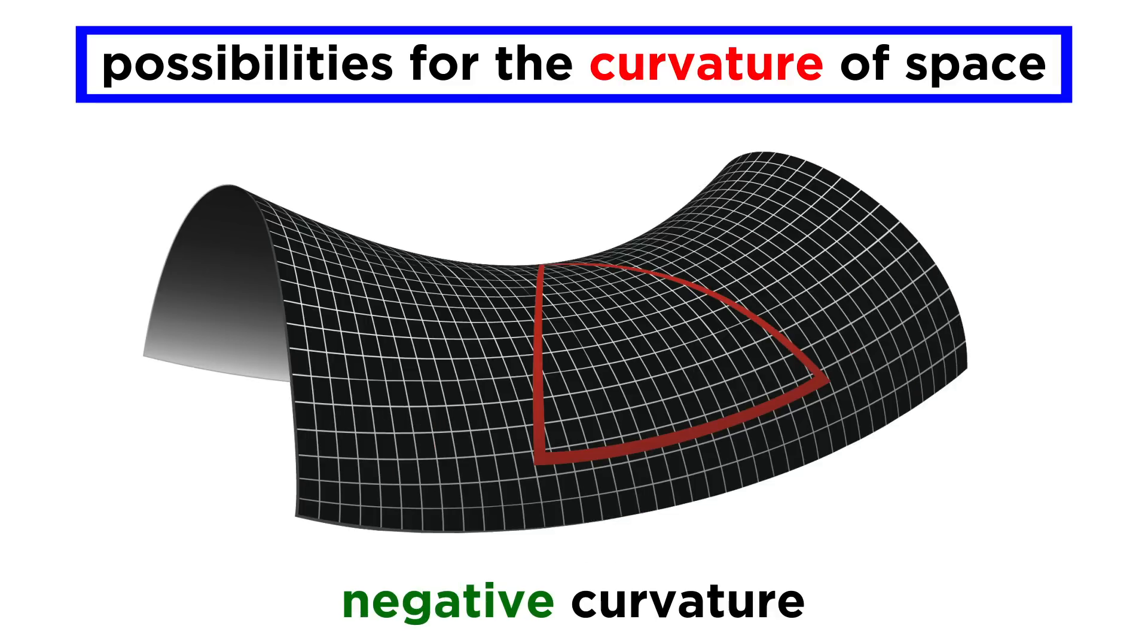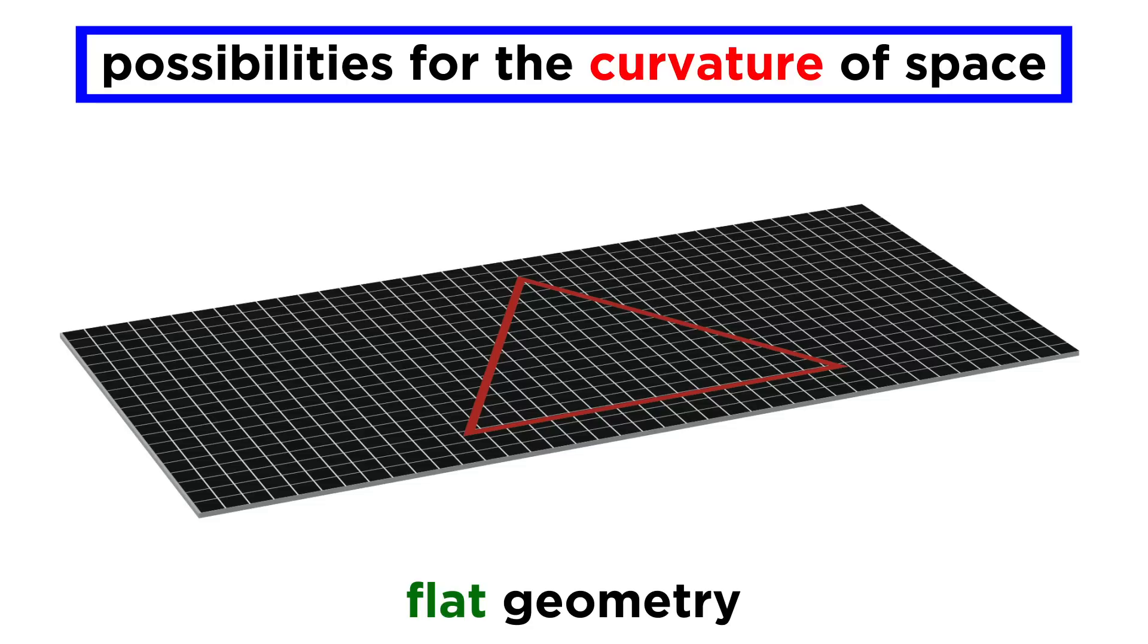There is negative curvature, which is a little harder to visualize, but looks kind of like a saddle, and here the angles of a triangle add up to less than 180 degrees. And then there is the possibility of a flat geometry, where the angles in a triangle add up to precisely 180 degrees.